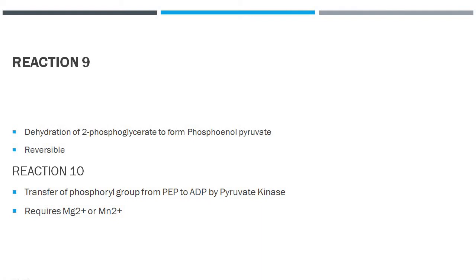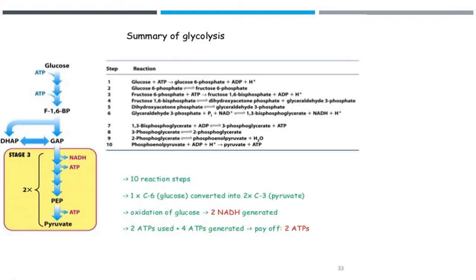That is the second step where an ATP molecule is produced, and this step requires magnesium 2+ ion to complete.